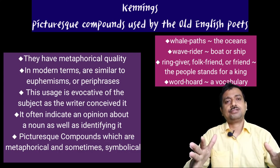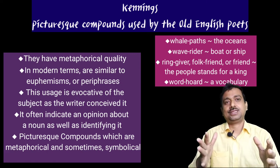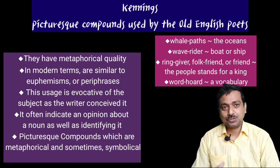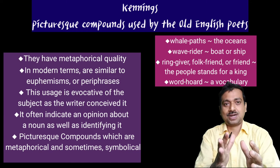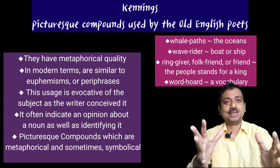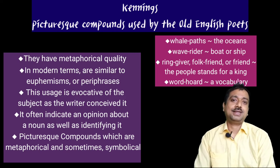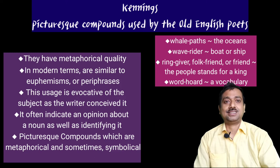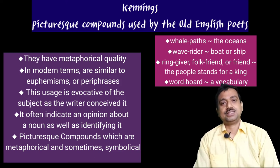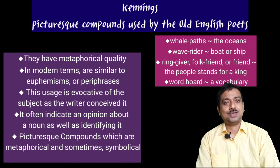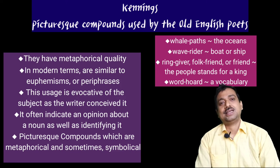In many elegiac poems we find a particular feature called kenning. When going through Old English poetry, you must know what a kenning is. Kenning means picturesque compound words used by Old English poets that have a metaphorical quality. In modern terms you might call it euphemism or periphrasis. For example, 'whale-paths' indicates the ocean; 'wave-rider' is for boat or ship; 'ring-giver' means a king or lord who gives treasure.